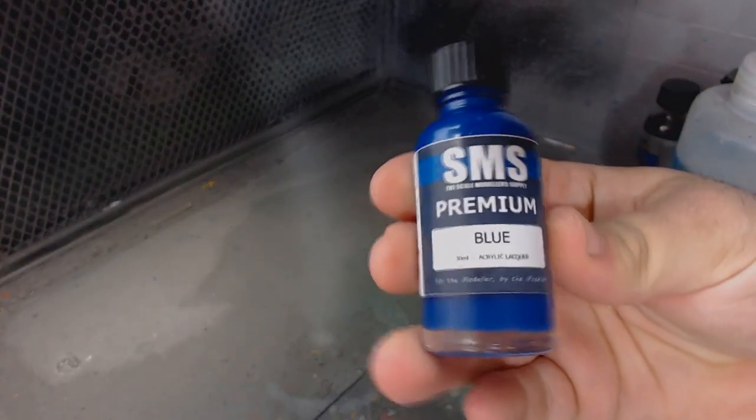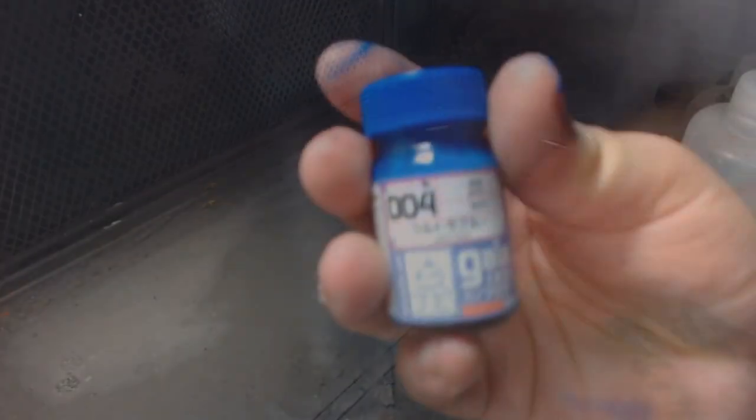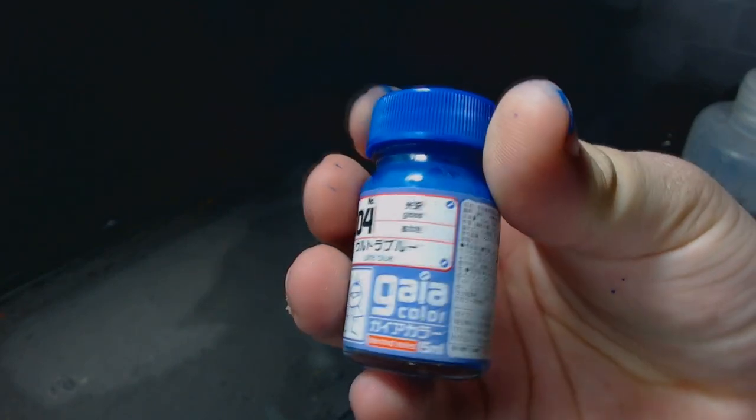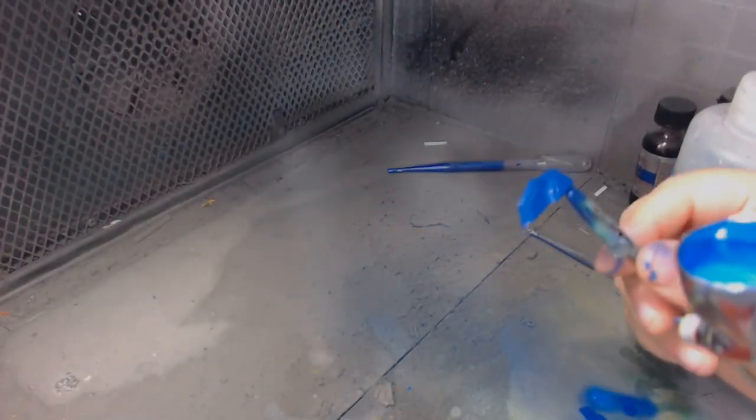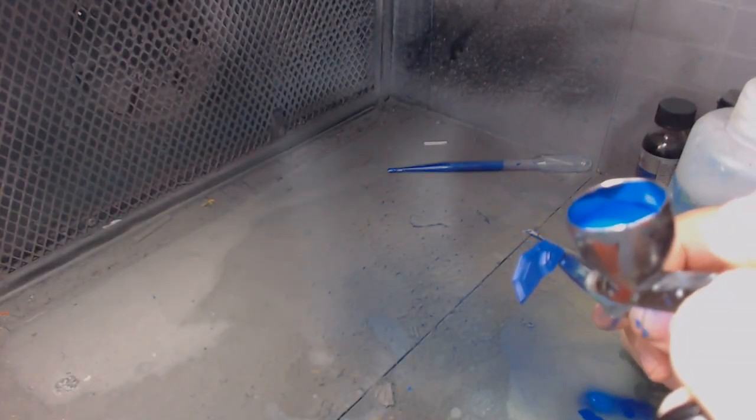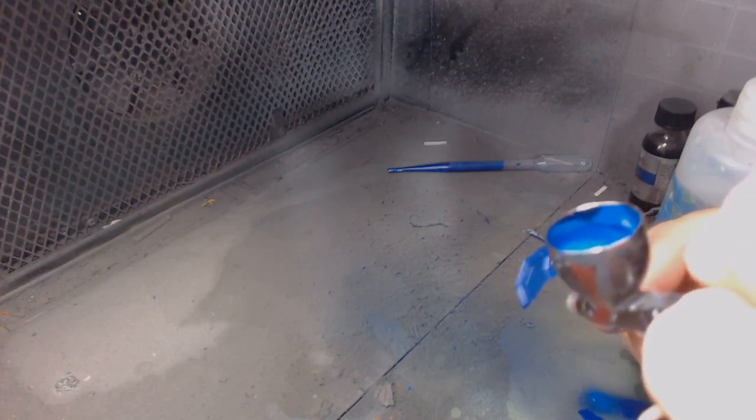For blues, I used a base coat of SMS's Blue, and I shaded over with a coat of Ultra Blue. Again, I made sure to avoid any of the edges around panel lines and things like that. Shading blue is a lot of fun to me because the colors blend so naturally, the end result always looks fantastic when you shade blue.